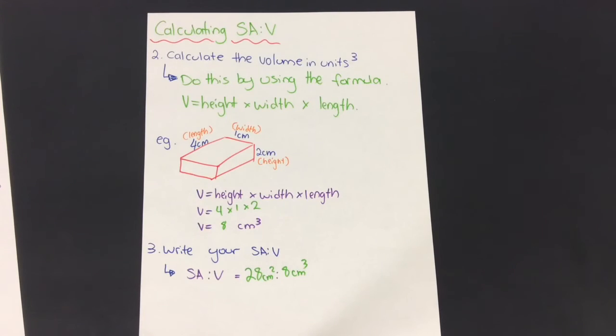Let's recap what we've learned. Cells are small because they need to move substances in and out of an object very efficiently and very effectively. To calculate surface area to volume ratio, first calculate the surface area, then the volume, and then put it together in a ratio.